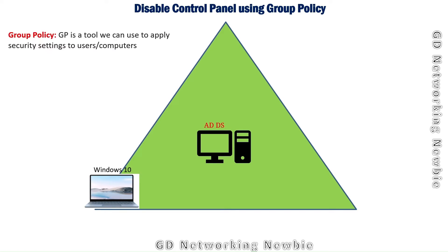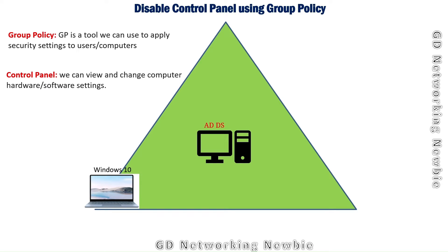For that I'll be using Group Policy, which is simply a tool or set of tools we can use to apply security settings to users and computers. In our case, we want any user with a specific user account, when they log in, to not be able to see Control Panel. Control Panel is a feature in Windows by which anyone can view and change computer hardware or software settings — for example, they can disable the network interface card, preventing access to internet services.